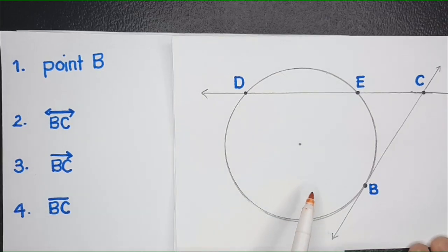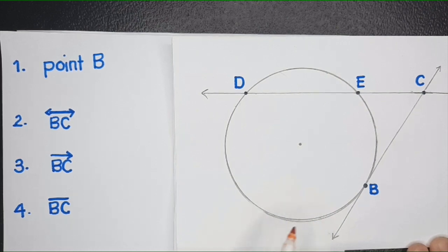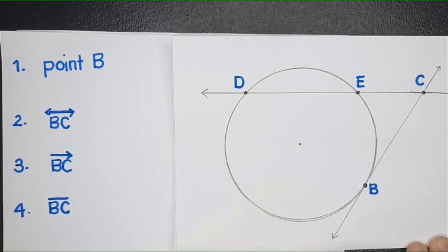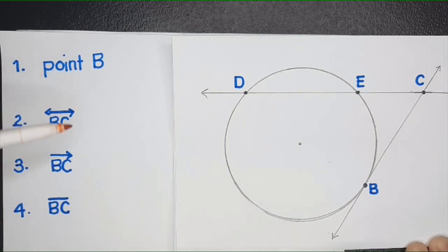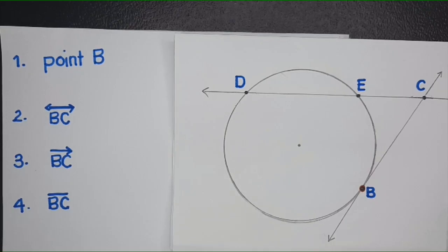So, here we have a figure. We are going to identify what parts related to this circle are named. We're going to name these parts related to this circle. I think it's best to start with number two.